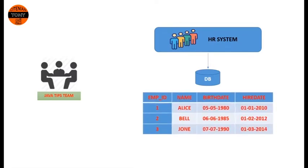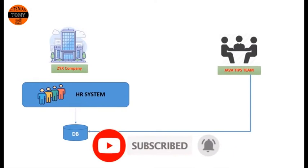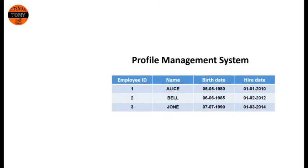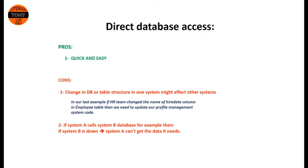The next day, our development team held a meeting and the business analyst said that Six Company already has an HR system. This HR system works on a database, and this database contains all the data we need to fulfill our profile management system. The next day, our development team tried to contact the HR system team and asked them to give us direct access to the specific table which provides the data we need. The HR system team approved.